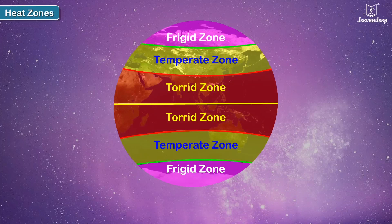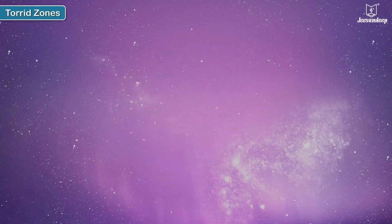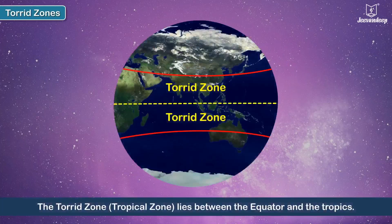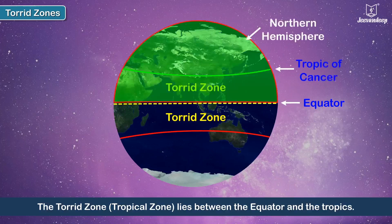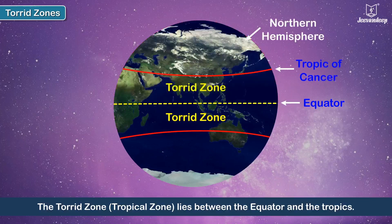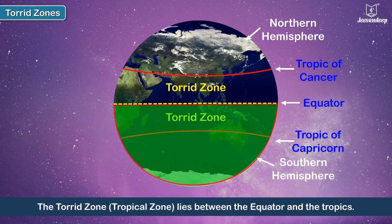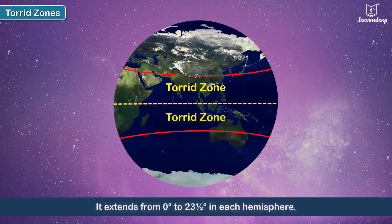The Torrid Zone, also known as the Tropical Zone, lies between the equator and the tropics — the Tropic of Cancer in the Northern Hemisphere and the Tropic of Capricorn in the Southern Hemisphere. It extends from zero degrees to twenty-three and a half degrees in each hemisphere.